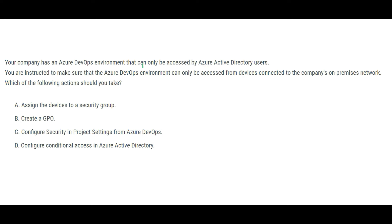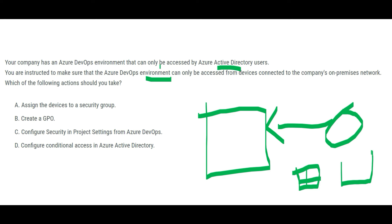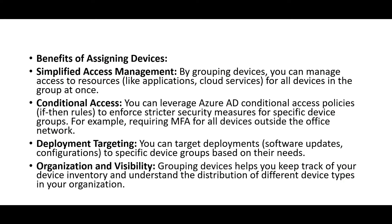The next question: your company has a DevOps environment that can be accessed through Active Directory. All Active Directory users should be able to access this. You are instructed to make sure the DevOps environment can only be accessed from devices connected to the on-premises network of the company — only those devices should be able to access it.